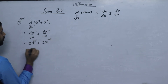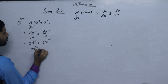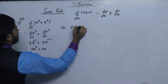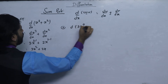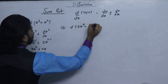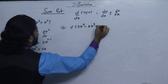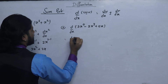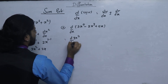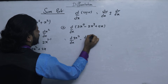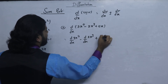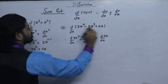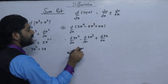x square plus 2x, with respect to dx. x square plus 2x differentiation data. 3x dx minus differentiation. x cube plus differentiation, x cube plus x. x square plus 3x.